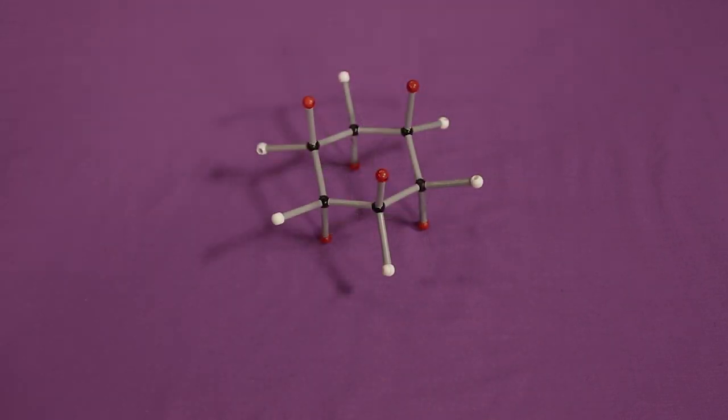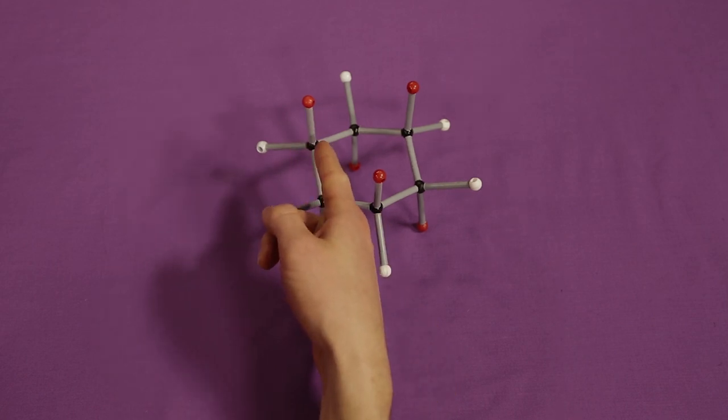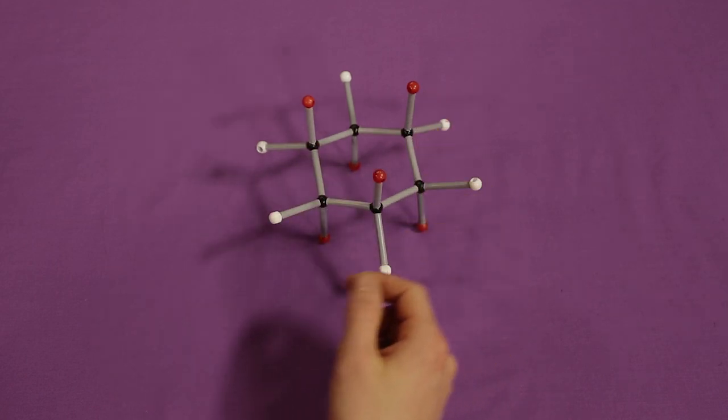When a ring is flipped, the axial substituents will become equatorial and the equatorial substituents will become axial.